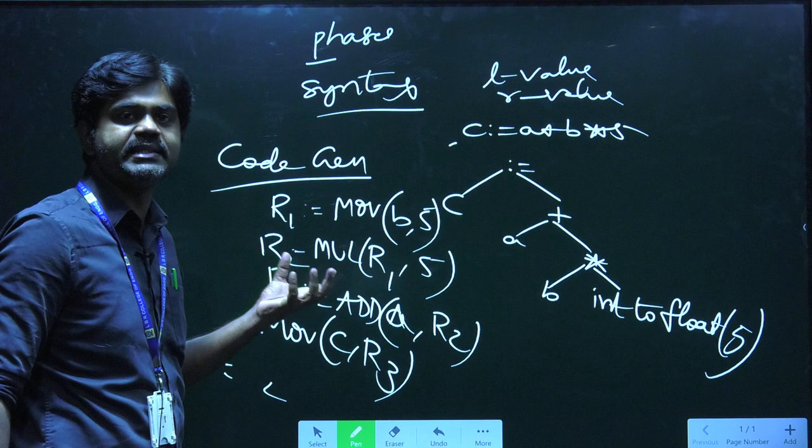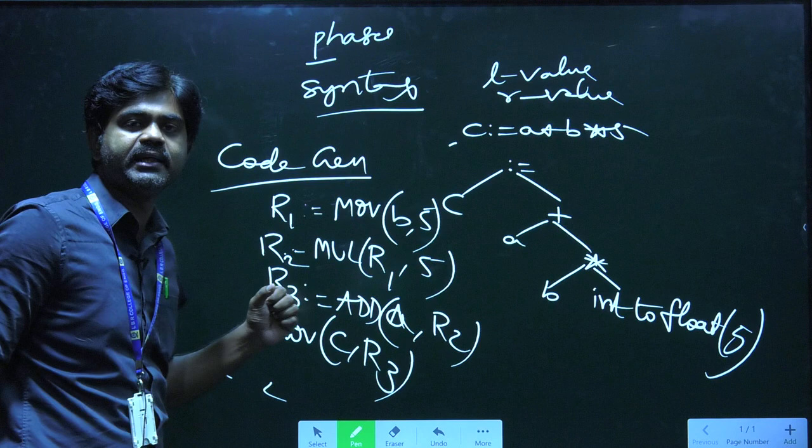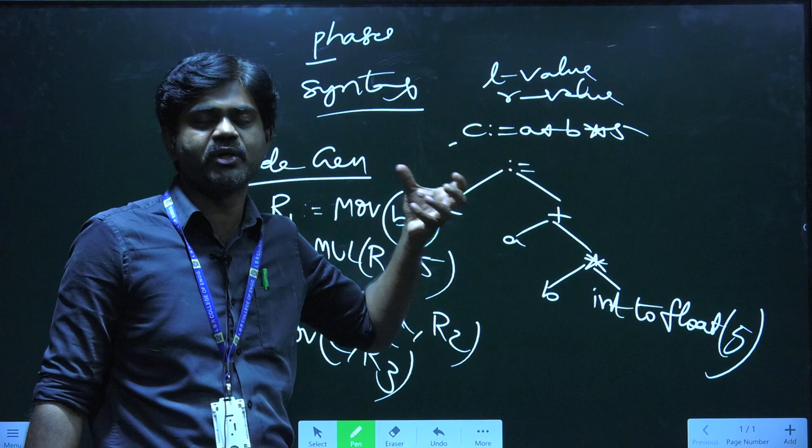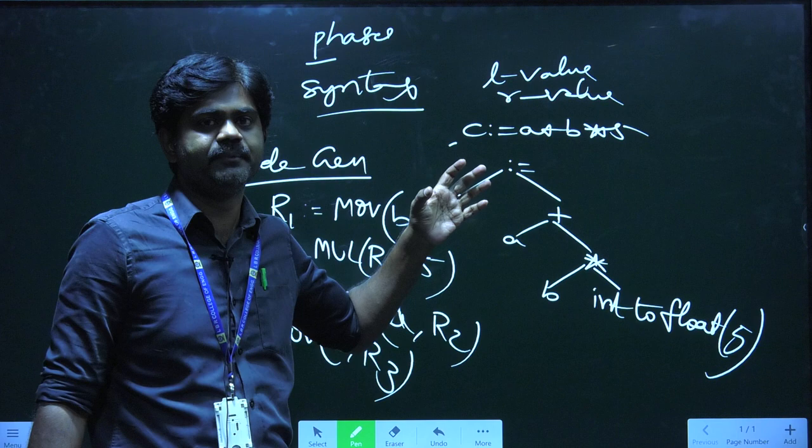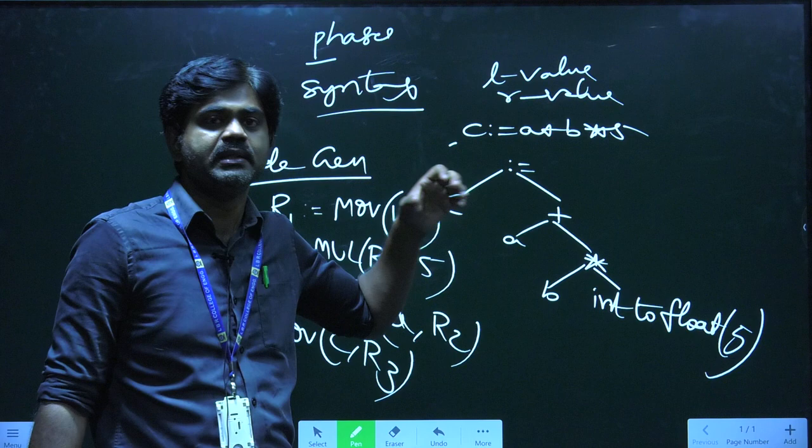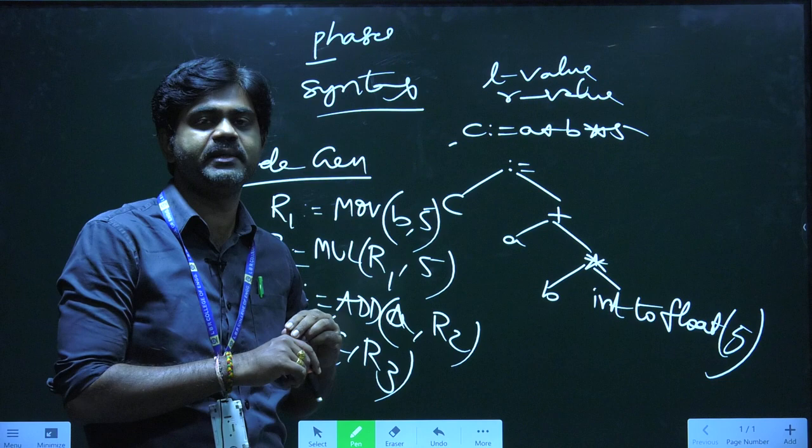These are the six typical phases of a compiler. In every phase, we have error control to handle any errors that occur, and we have symbol table management where everything is stored as a symbol. I hope you understood the topic. Please subscribe to our channel, share our videos with your friends and well-wishers, and support our channel in all possible ways. Thank you very much and have a wonderful day.